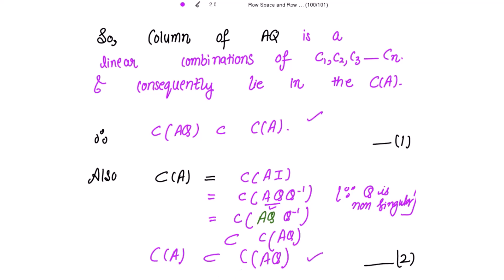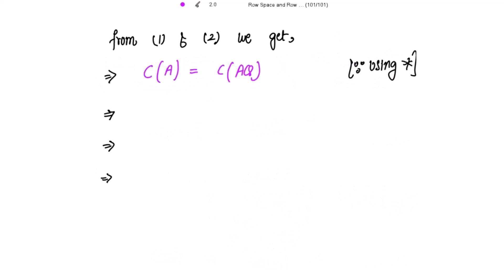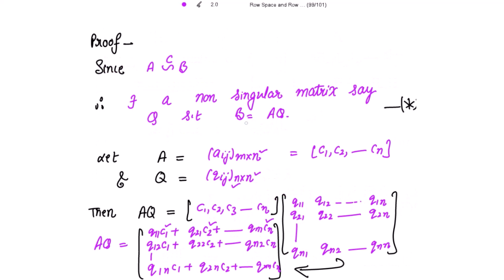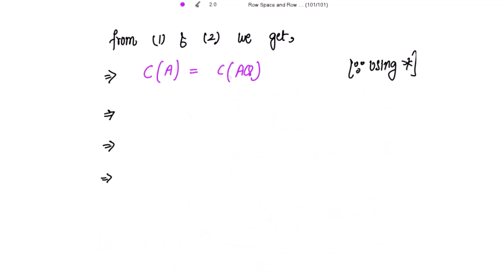From results 1 and 2, we get that the column space of AQ is equal to the column space of A. And from the star result, B equals AQ, so we can write that the column space of B equals the column space of AQ. Therefore, this implies the column space of A is equal to the column space of B.